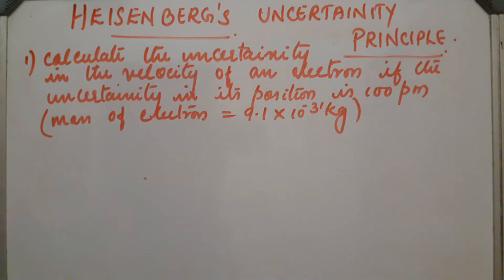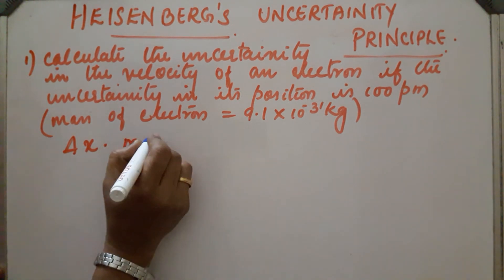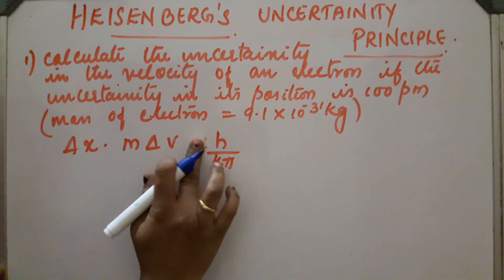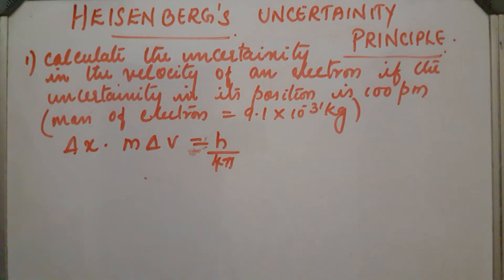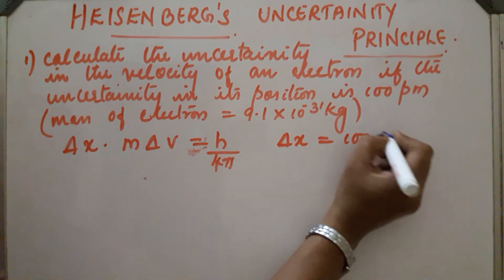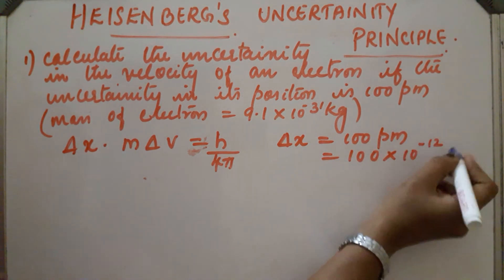First problem: Calculate the uncertainty in the velocity of an electron, if the uncertainty in its position is 100 pm. The mass of the electron is given as 9.1 × 10⁻³¹ kg. Using the uncertainty principle: Delta X into M Delta V is greater than or equal to h by 4 pi. Delta X is 100 pm, which equals 100 × 10⁻¹² meter.